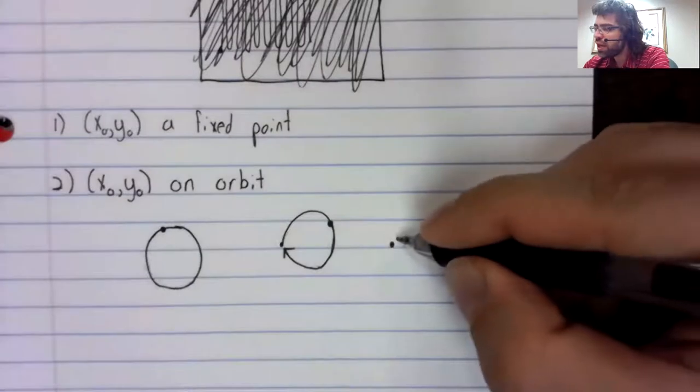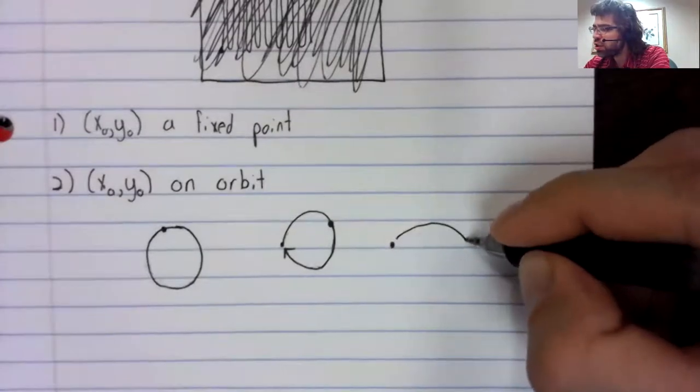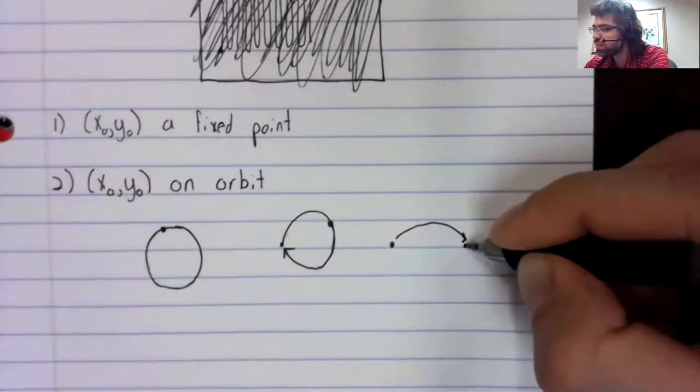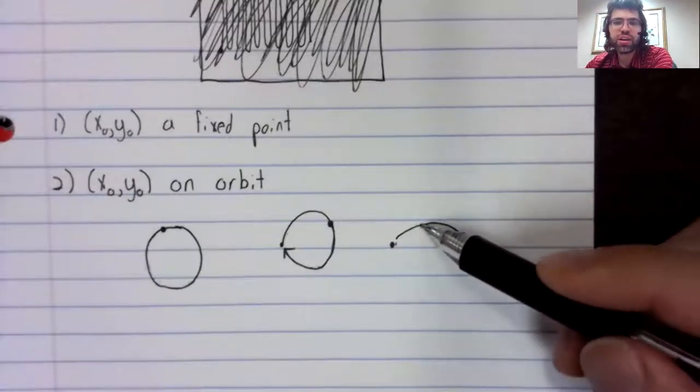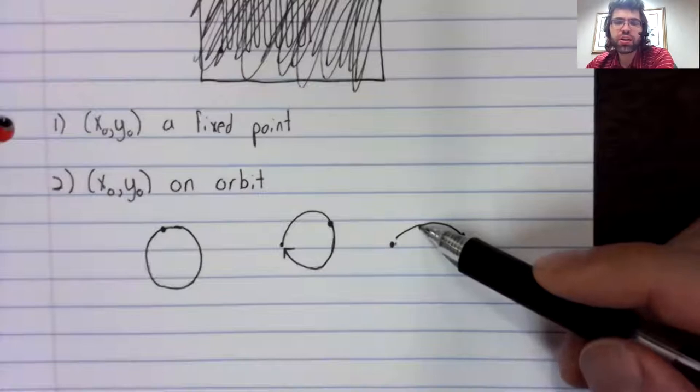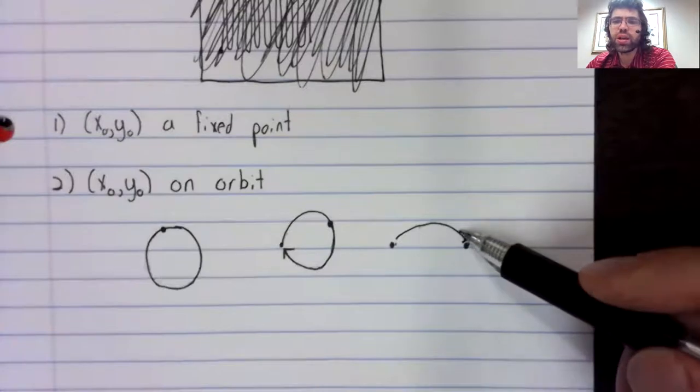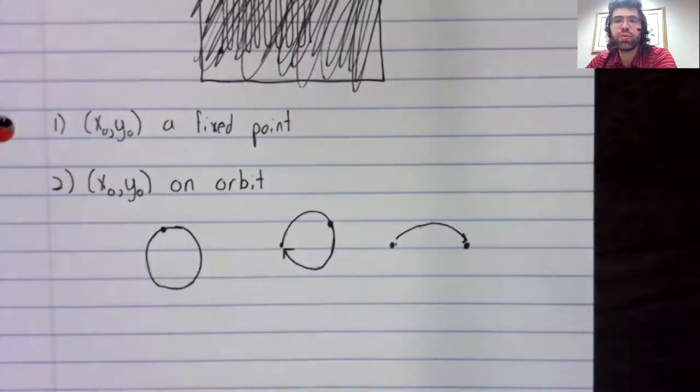Likewise, if we have a heteroclinic orbit between fixed points, and we start on the heteroclinic orbit, then as time passes, we approach a fixed point.